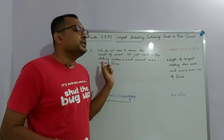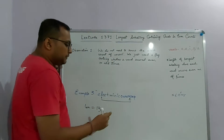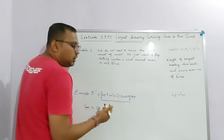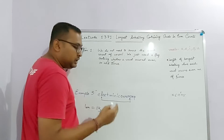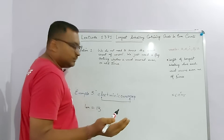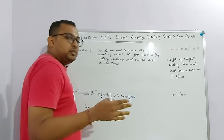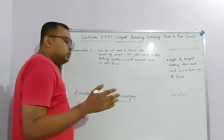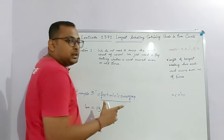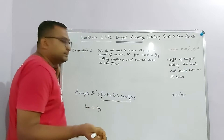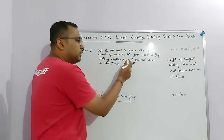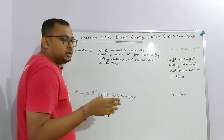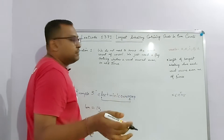The first key observation is that we do not need to know the exact count of a vowel. We only need to know whether a vowel has occurred an even or odd number of times. That means we just need a flag — a binary state: 0 meaning even number of times, 1 meaning odd number of times.